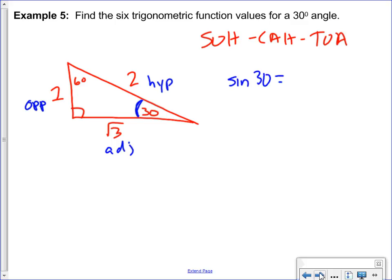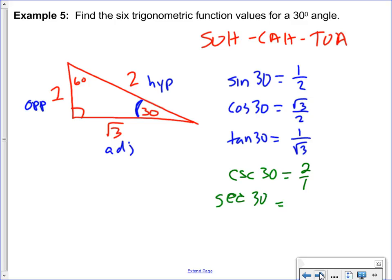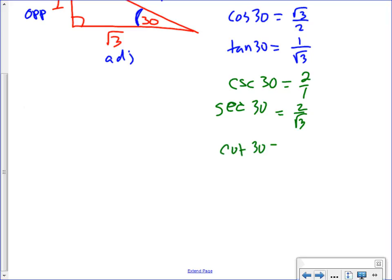Sine of 30 is one over two. Cosine of 30 is root three over two. And tan of 30 is one over root three. The flips. CSC of 30 is two over one. Secant of 30 is two over root three. And cotangent is root three over one.